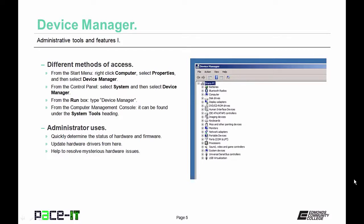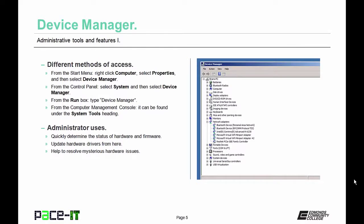Now let's talk about Device Manager. You can access it by right-clicking Computer from the Start menu and selecting Properties then Device Manager; or right-clicking Computer and selecting Manage; from the Control Panel by selecting System then Device Manager; from a run or search box by typing Device Manager; or from Computer Management under System Tools. Device Manager allows the administrator to quickly determine the status of hardware and firmware, update hardware drivers, and resolve mysterious hardware issues.